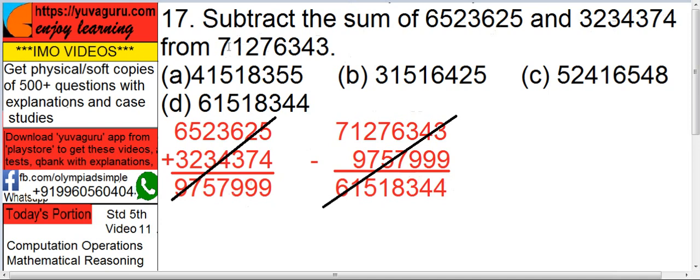How many digits are there in this number 71276343? 8 digits. So what you do is take the first digit of each number from the first two.